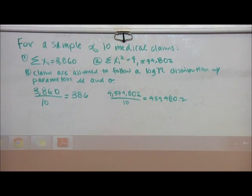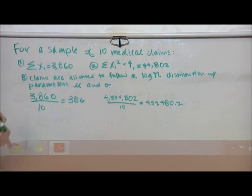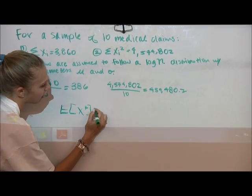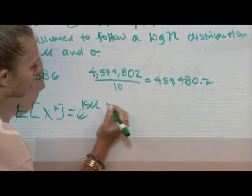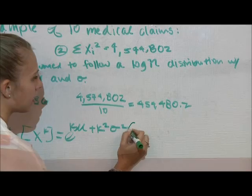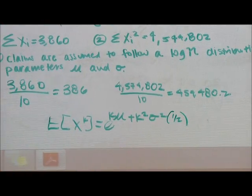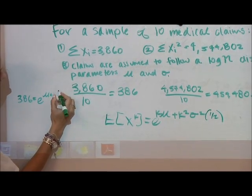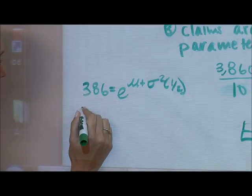Now we are going to set these equal to the first and second moments used for a log-normal distribution found in your tables. So that formula, expected value of X to the k equals e to the k mu plus k squared times one-half sigma squared. So then, we can set 386 equals e to the mu plus one-half sigma squared.